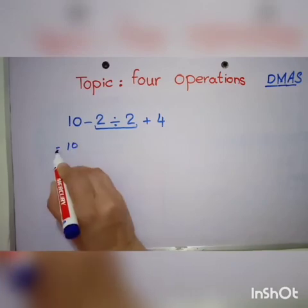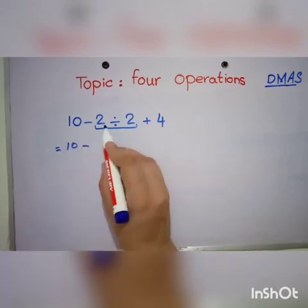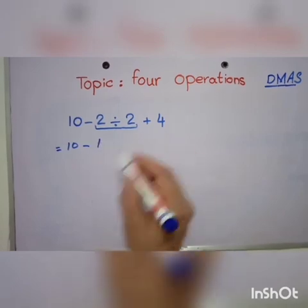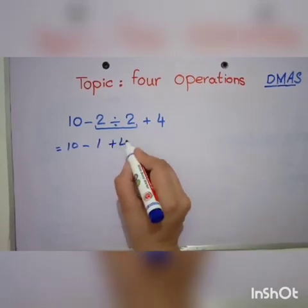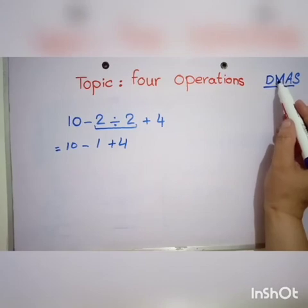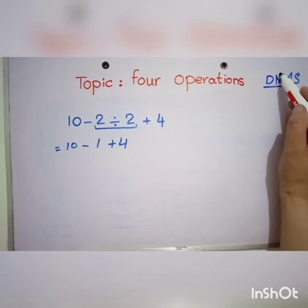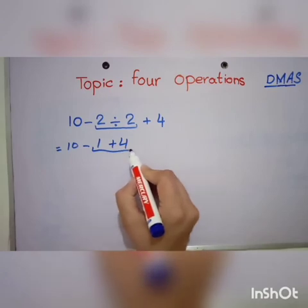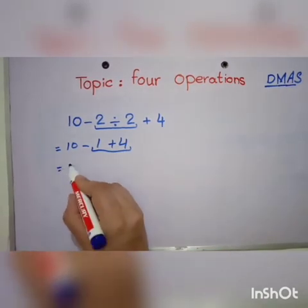10 as it is will be written, minus sign stays here, 2 divided by 2 is 1, plus 4. Now next we have multiplication. Since this question doesn't have multiplication, we will skip it. After that we have addition. Addition is there, yes. Now 1 plus 4 will be added.